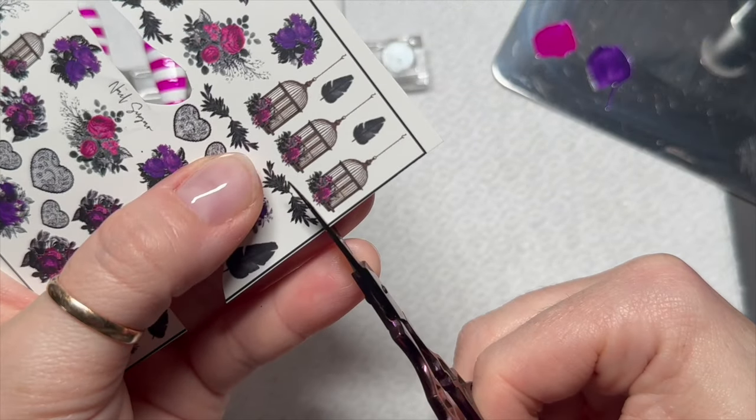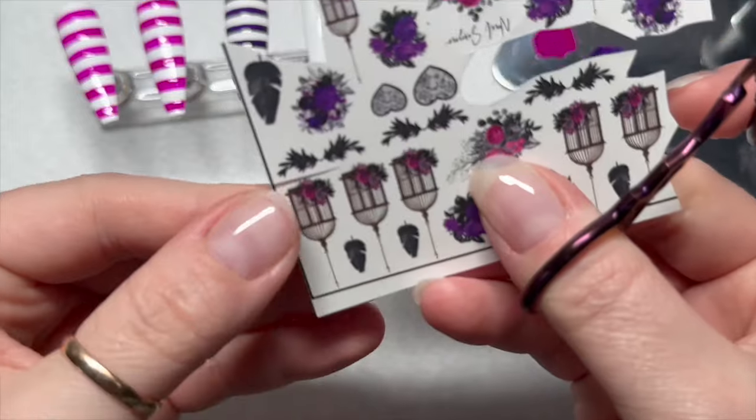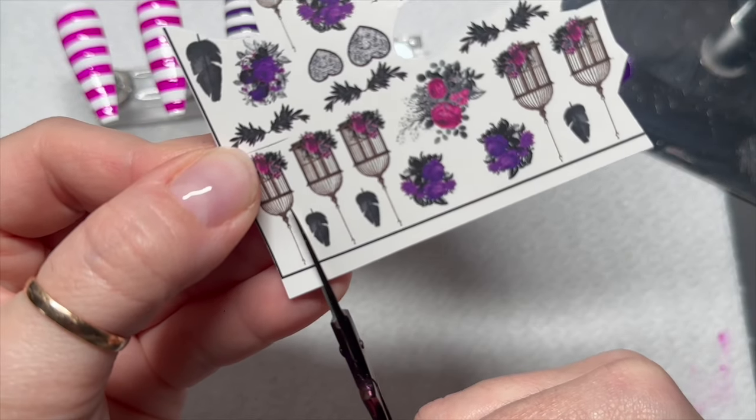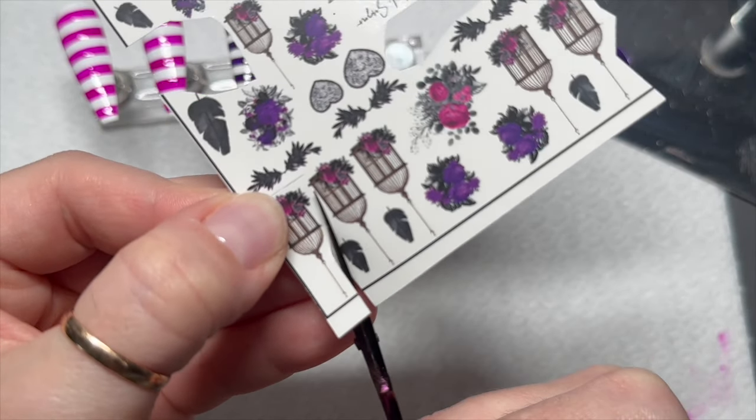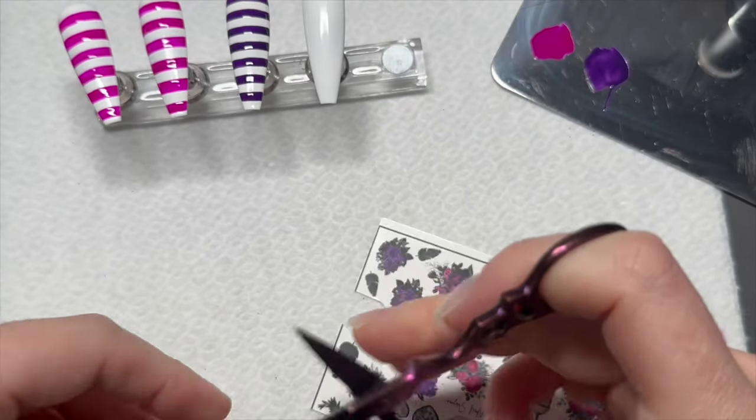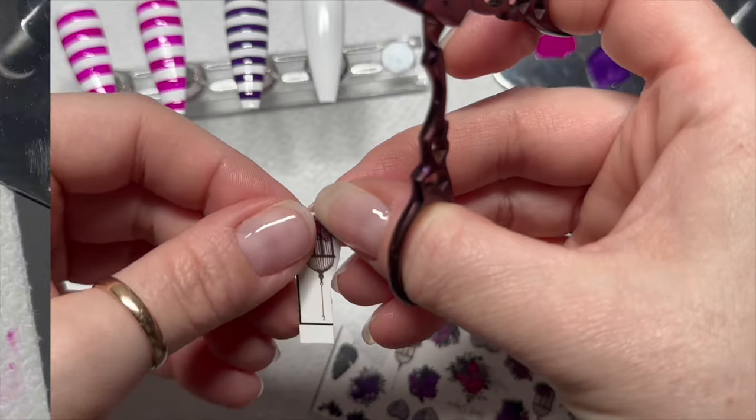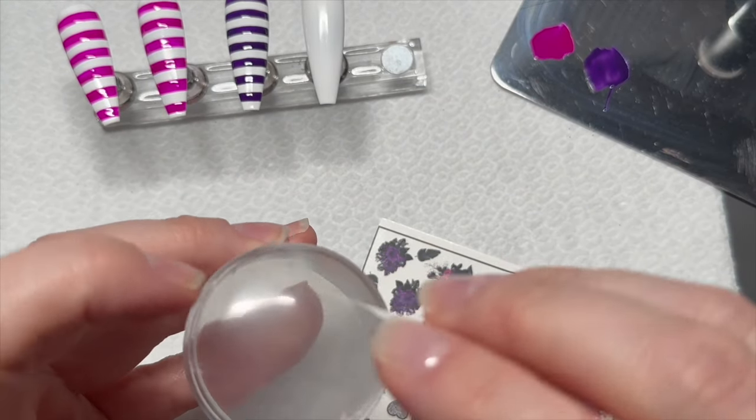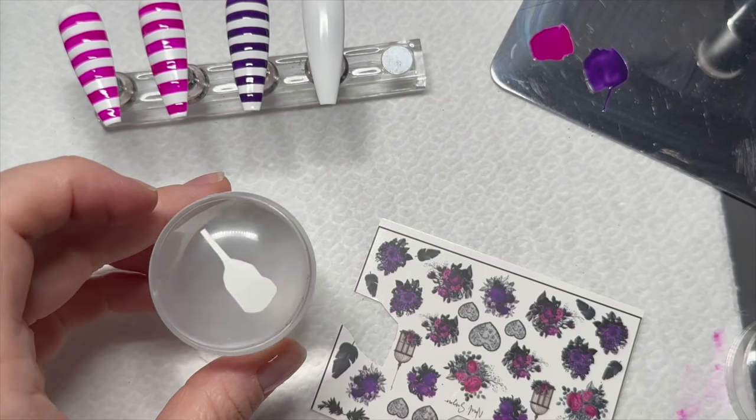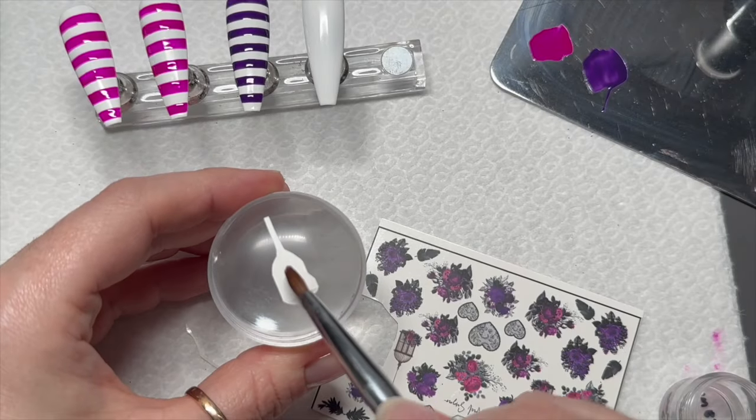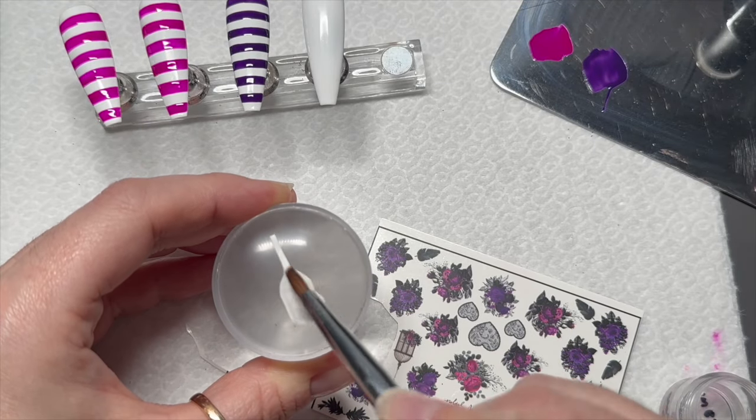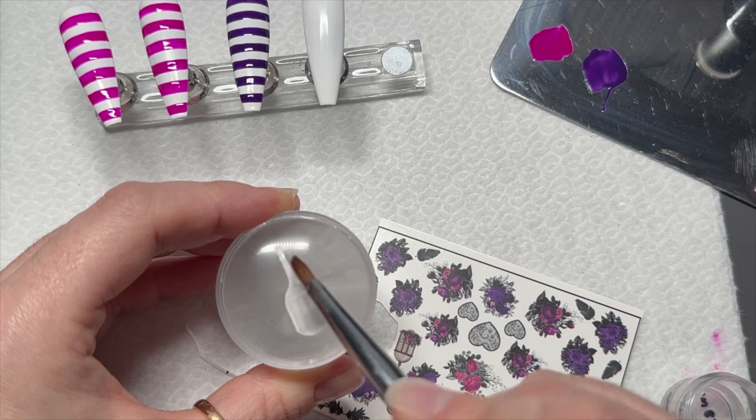I'm going to use one of these big birdcage decals. I'm going to cut these out, taking off a lot of the excess so we're just left with basically the design. I only stamp these on now because since I've learned this way, I'm like, how did I do it the other way for so long?